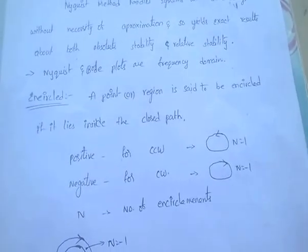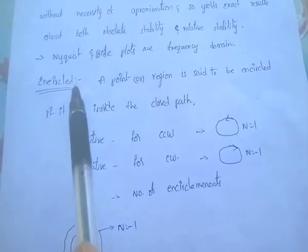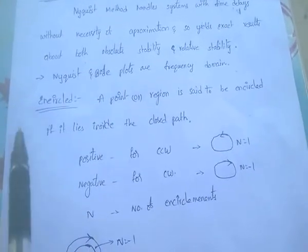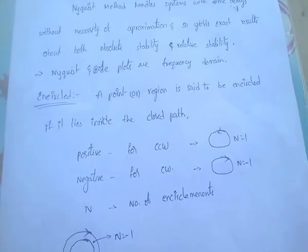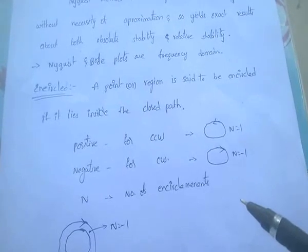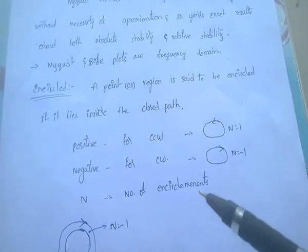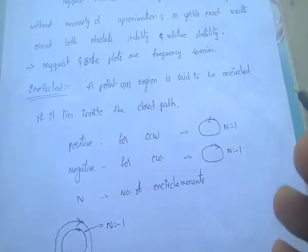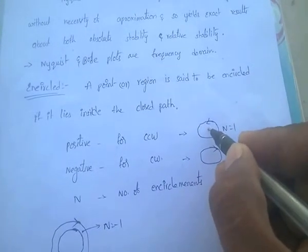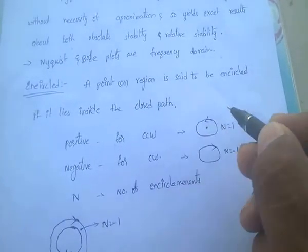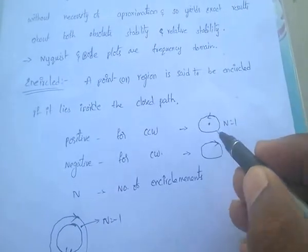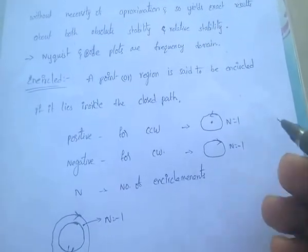The term encirclement is mainly used in the Nyquist plot. Encircled means a point or region is said to be encircled if it lies inside the closed path. If a point is inside the closed path, it is encircled. If it is outside, there is no encirclement.